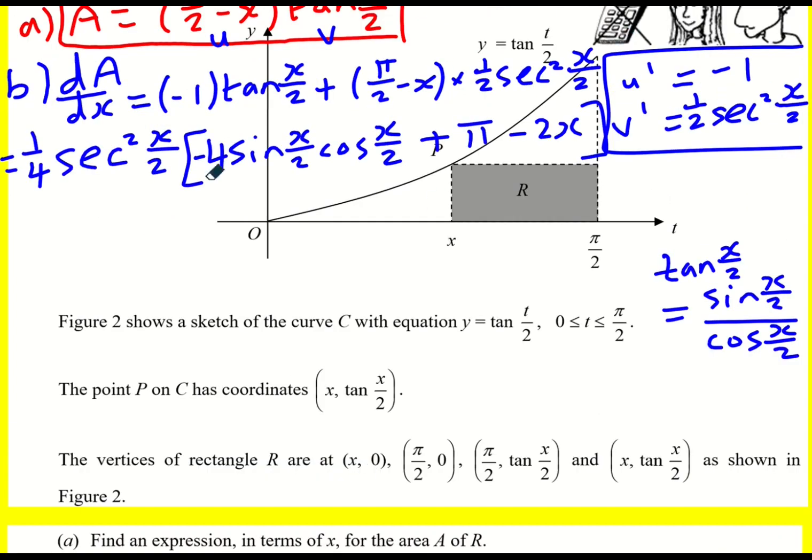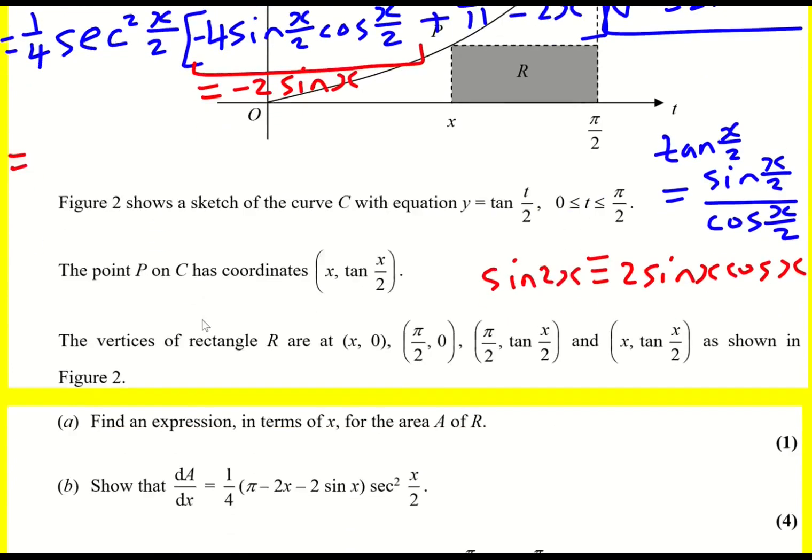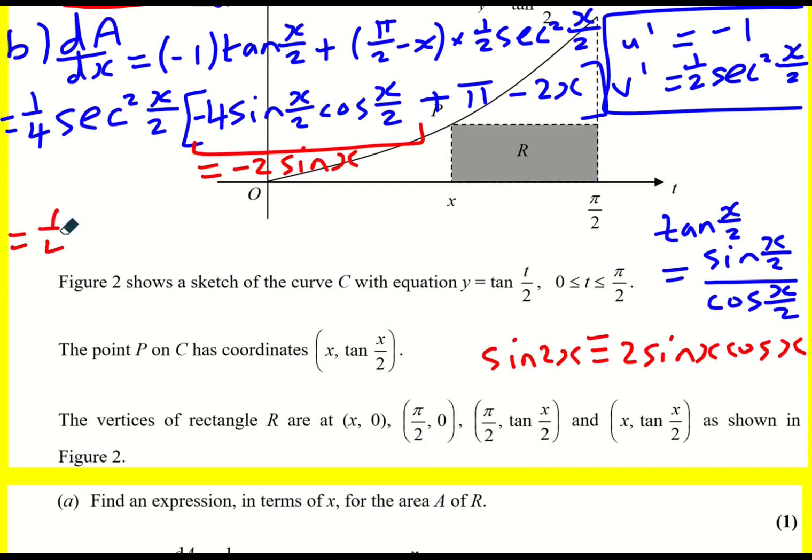So don't forget, this will actually equal minus 2 sin x. How do I know that? Because sin 2x is 2 sin x cos x. So if I replace everything through by x over 2, then this bit here will become just sin x. And I've factored that out of the 2 as well. So we're nearly there, I'm just going to write it in the same form. So I've got my quarter, then I've got my bracket, π minus 2x minus 2 sin x, sec squared x over 2. Okay, you might do it slightly differently to how I've done it, but you should get this result.